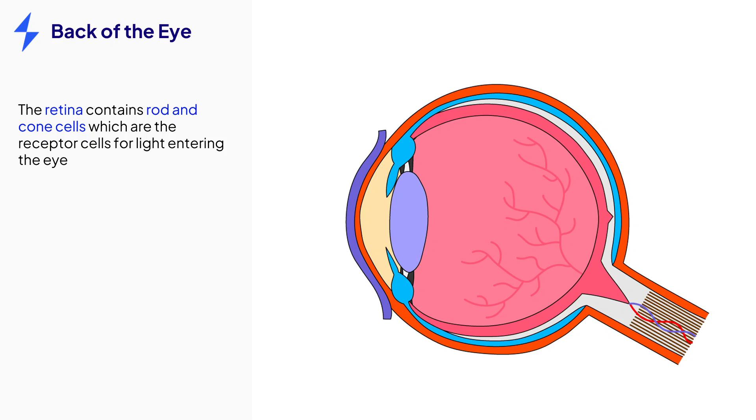Now let's take a look at the back of the eye. The retina is the location of the light receptor cells, the rods and cones. These cells of the retina are all connected to sensory neurons that send the information from the detected light to the brain.